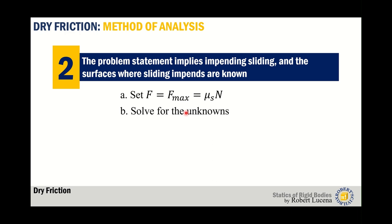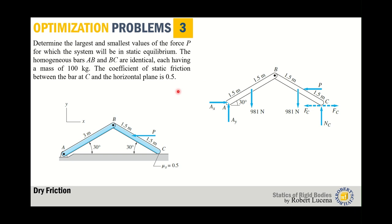There is another case where the problem statement implies impending sliding and the surfaces where sliding impends are known. If the case is impending, the maximum friction μsN is used — not just for comparison but also for solving the maximum force the object can carry to remain in place. These are the kinds of problems that use the maximum value of friction.